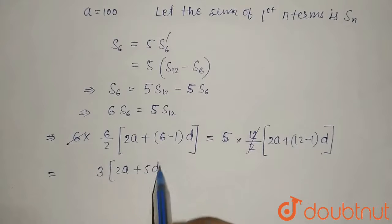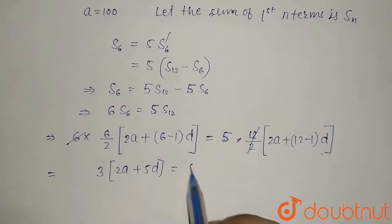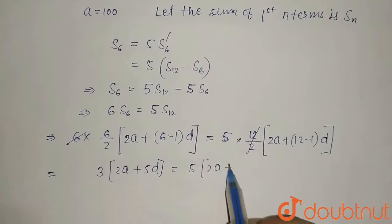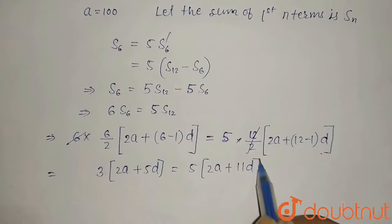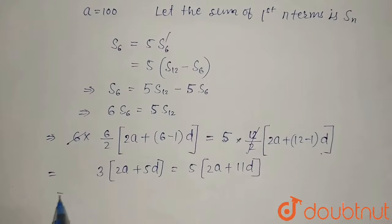This equals 5(2a + 11d). Further we can simplify: 6a plus 15d equals 10a plus 55d.